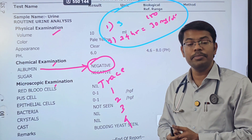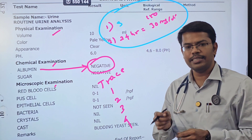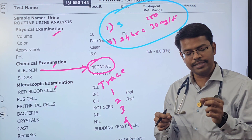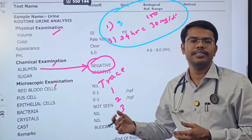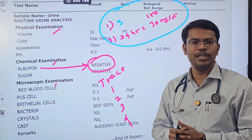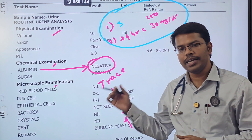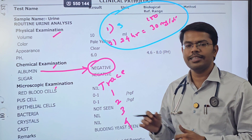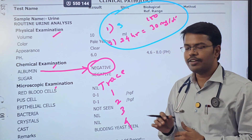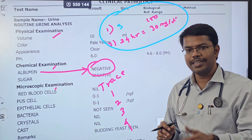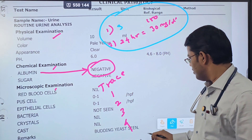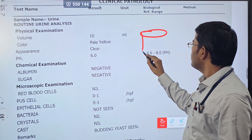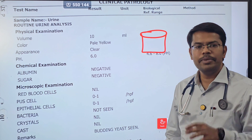This dipstick test is a semi-quantitative test that uses a color agent on strips. As per the reaction, the color changes and an approximate value is given. It is sensitive mostly for albumin only. So semi-quantitatively we are measuring albumin, which is where the next confusion arises.